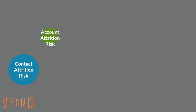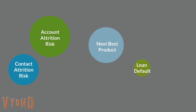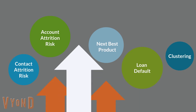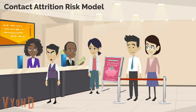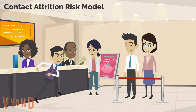QuickPivot works with a large financial institution, and together we have developed five models for machine learning that drive concrete business outcomes and deliver ROI. The contact attrition risk model is designed to predict the likelihood and time frame in which a contact will close all bank accounts and cease doing business of any kind with the bank.